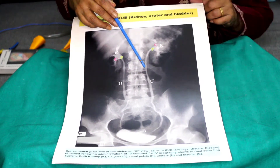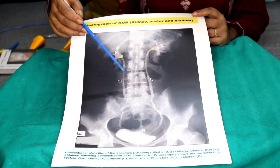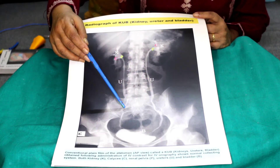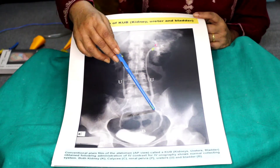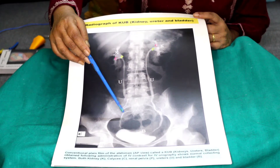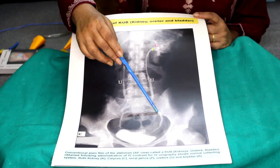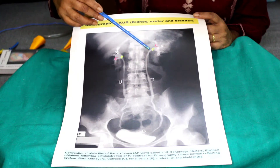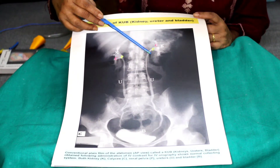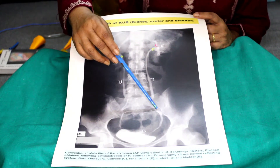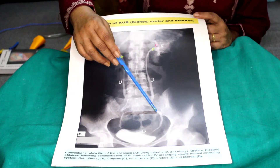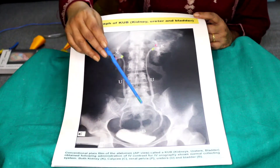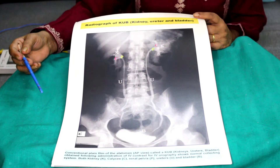There are some normal constrictions of the ureter. You will see here the ureter passes the pelvic brim — when it passes the pelvic brim there is a constriction. So at the pelvi-ureteric junction there is constriction, when it passes the pelvic brim there is constriction, and when it enters the urinary bladder there is another constriction.